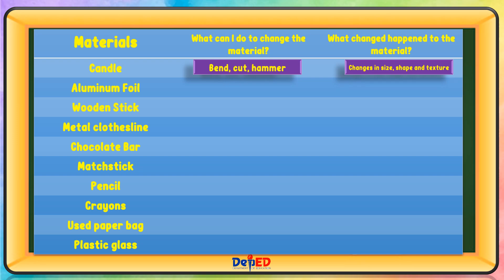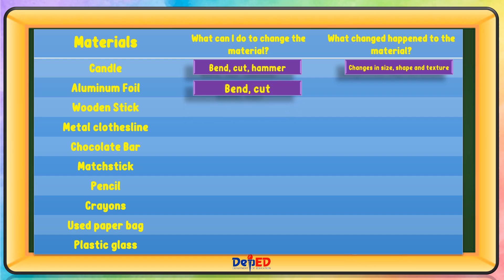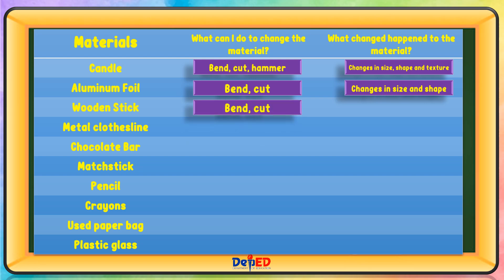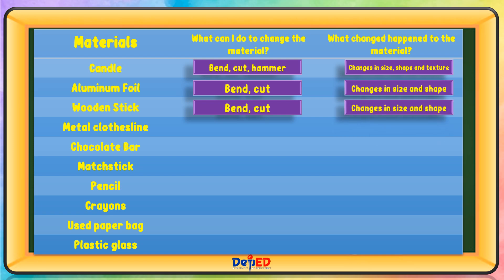Aluminum foil — what can I do to change the material? Bend and cut. What change happened to the material? Changes in size and shape. Wooden stick — what can I do to change the material? Bend and cut. What change happened to the material? Changes in size and shape.